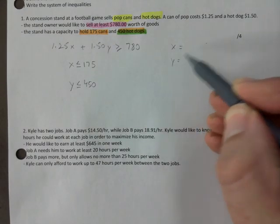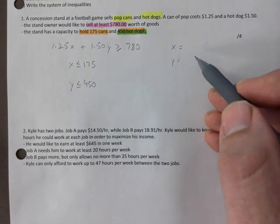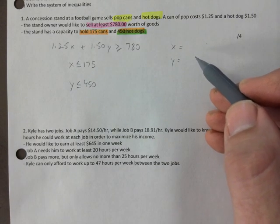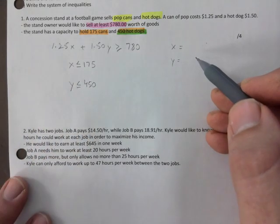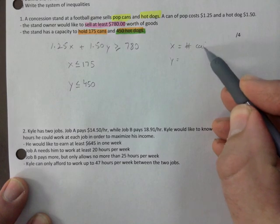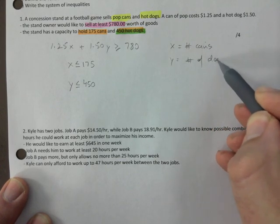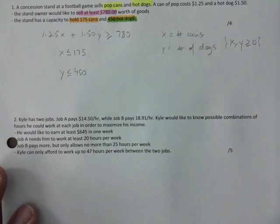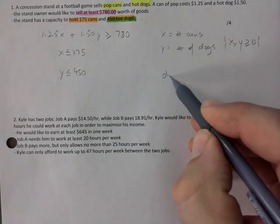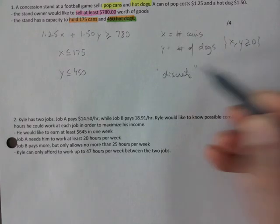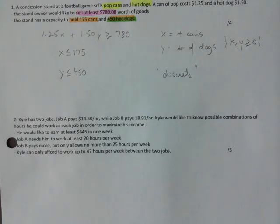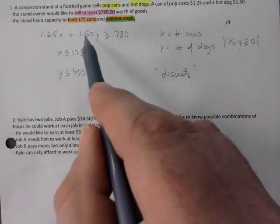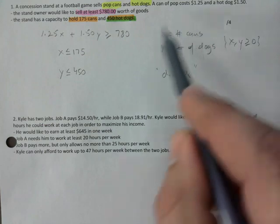I forgot to define my variables. Sometimes I write inequalities first and then define variables. x must be number of cans, y must be number of hot dogs, and both have to be greater than or equal to zero. This would be discrete, so when stating your POIs you would have to round. One mark for each inequality, then one mark for the whole variable definition.